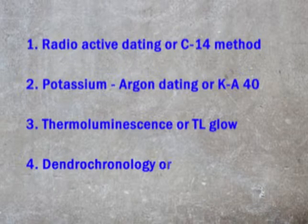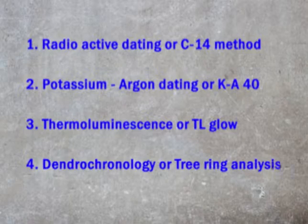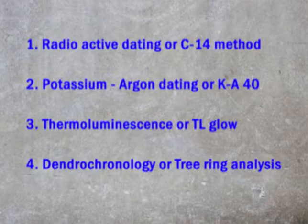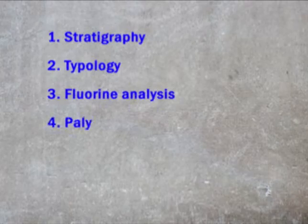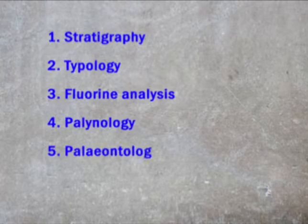Other absolute methods include thermoluminescence (TL) and dendrochronology or tree-ring analysis. In the early stages of prehistoric studies, researchers had only relative chronology. But in the last 50 years, with the emergence of the C-14 method, there has been a total change in dating scenarios. Under relative dating, different methods include stratigraphy, typology, fluorine analysis, palynology, paleontology, and patination.